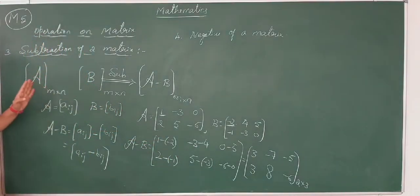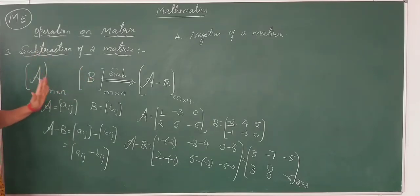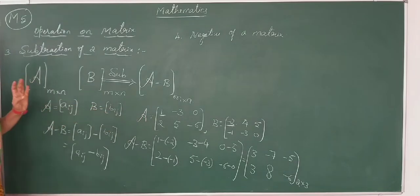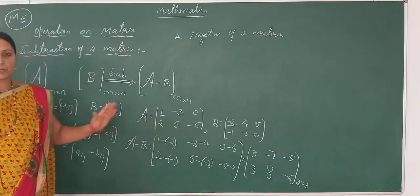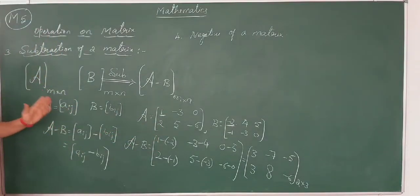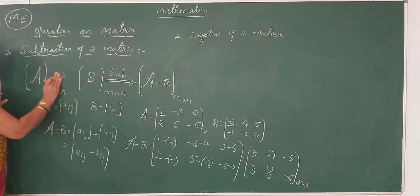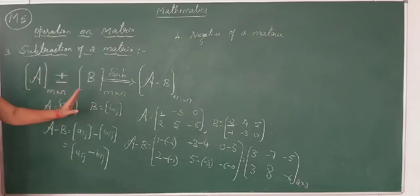For either addition or subtraction, the two matrices must have the same order, and the corresponding elements are either added or subtracted. But this same concept does not apply in the case of multiplication. Multiplication of two matrices does not follow the same element-wise procedure as addition and subtraction.